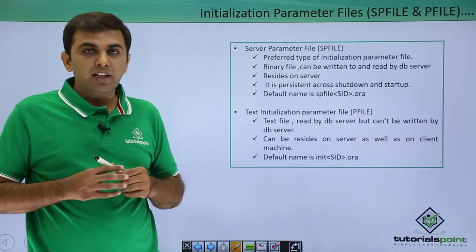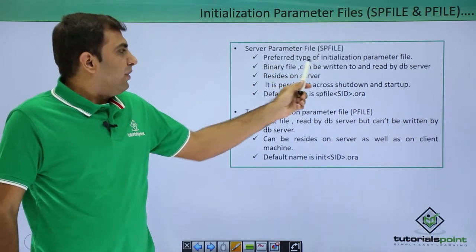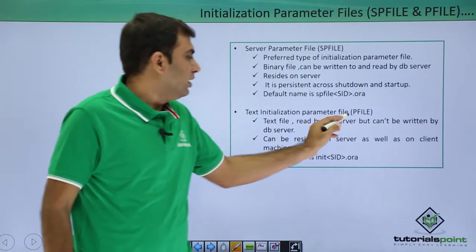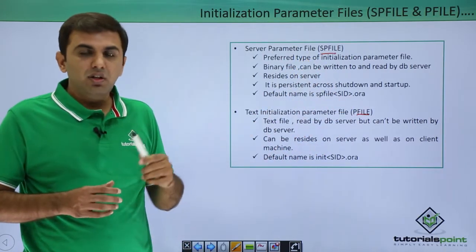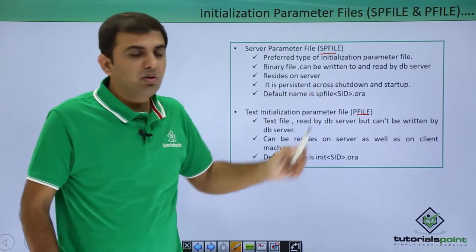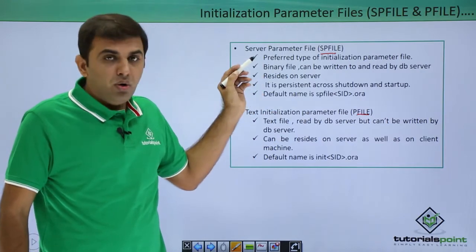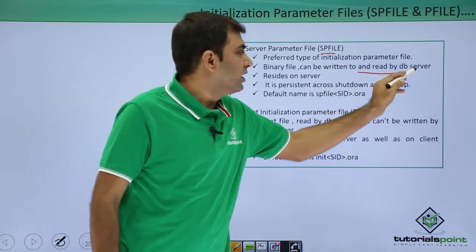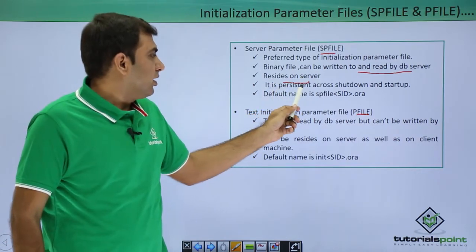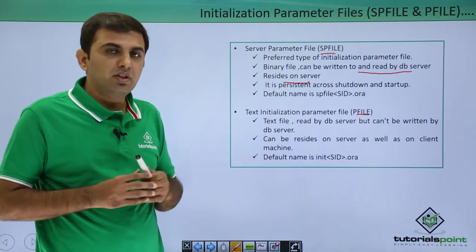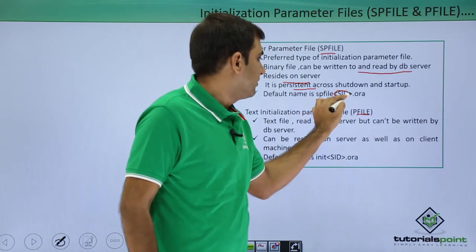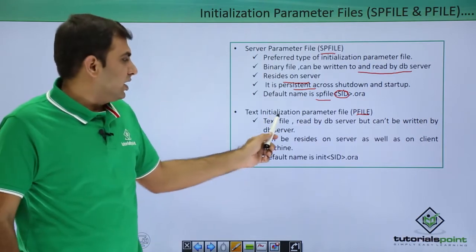What is the difference between these two files, spfile and pfile? The server parameter file (spfile) is the preferred type of initialization parameter file. When you start the instance, Oracle first reads the server parameter file; if this file is not available then it will read the pfile. The spfile is a binary file that can be written to and read by the Oracle database server only — not manually. It resides on the server and is persistent across shutdown and startup. The default name of your spfile is spfile followed by your SID name dot ora.